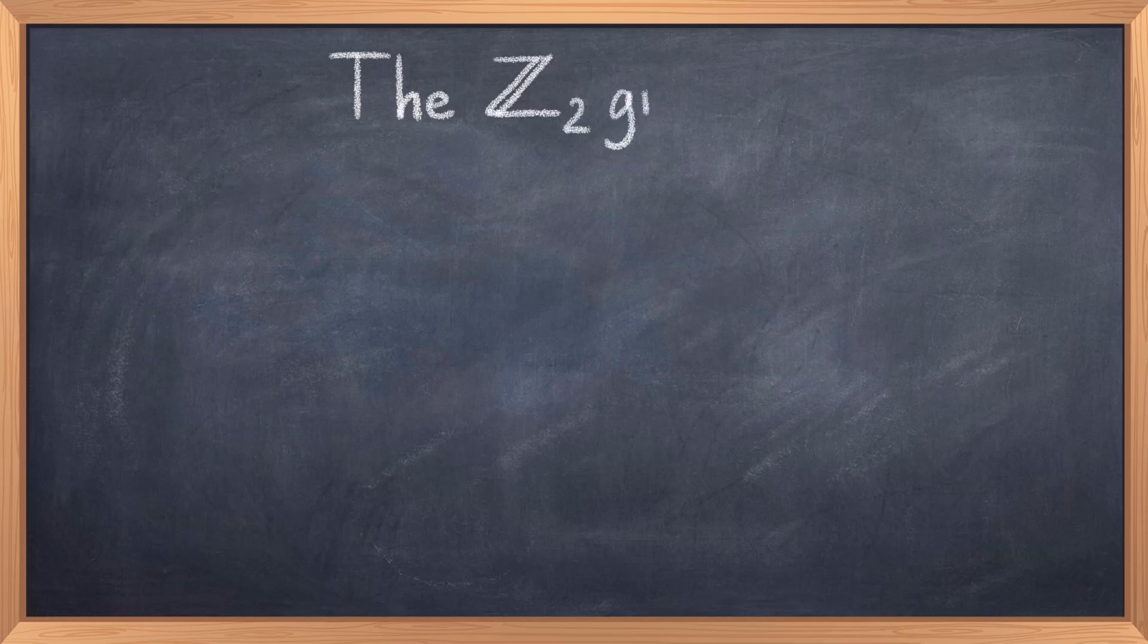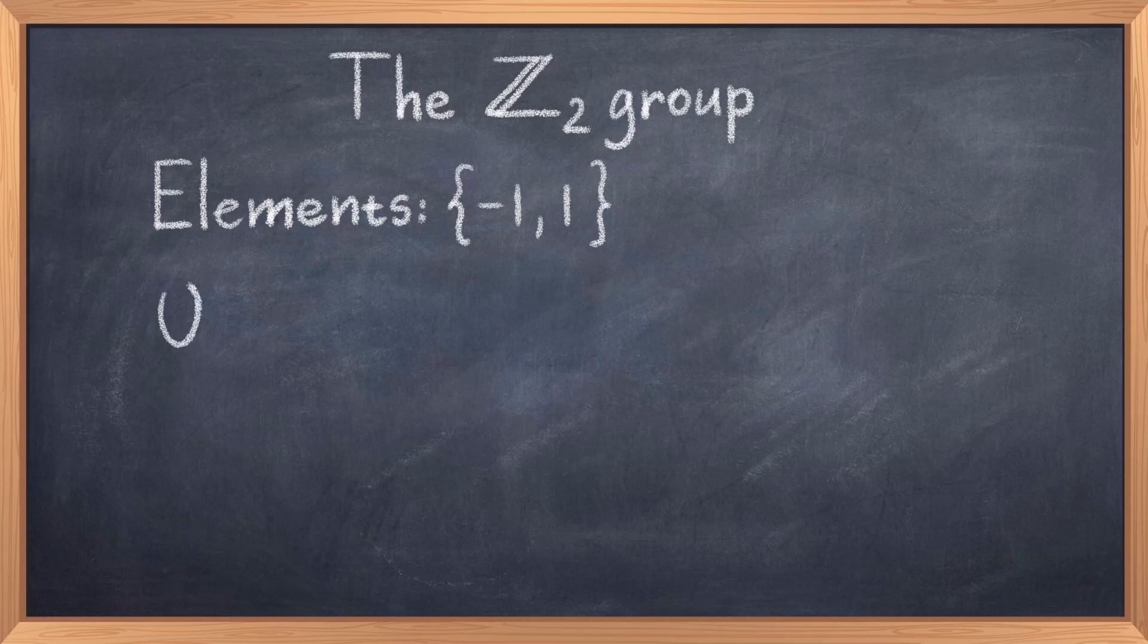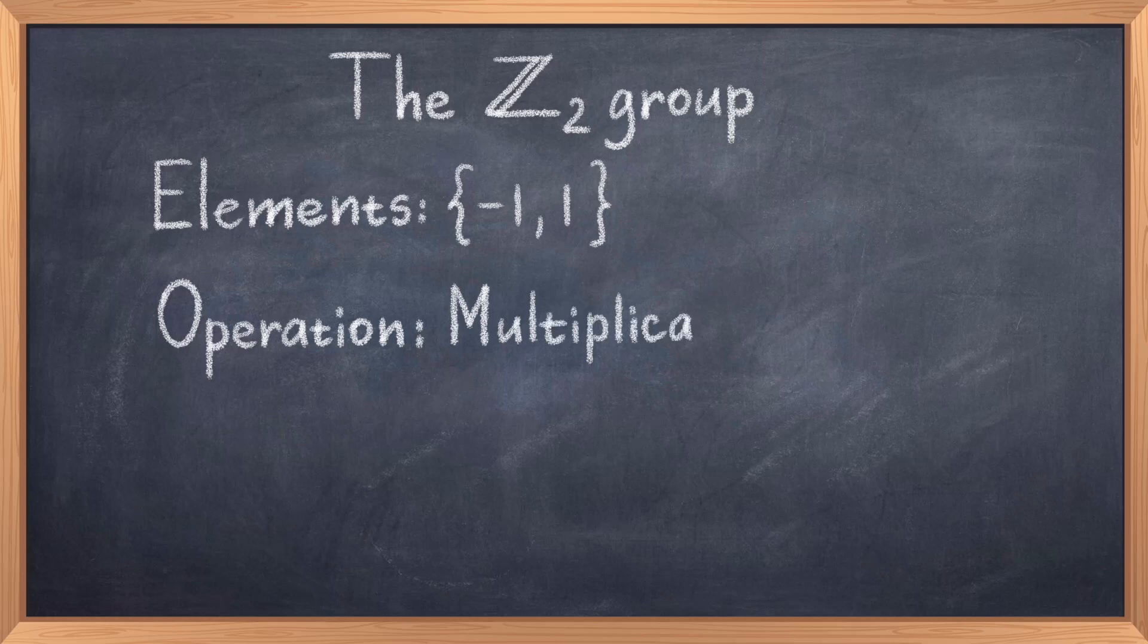To discuss more details about what is required to form a group, we will discuss another very simple group. This group is the Z2 group, or the cyclic group. We can represent this group in several ways, but let us consider the following representation. This group has two elements, which is the different configurations we can have in this group. Thus this group is even simpler than the D3 group. The elements of this group are 1 and minus 1. The operation of this group is multiplication.